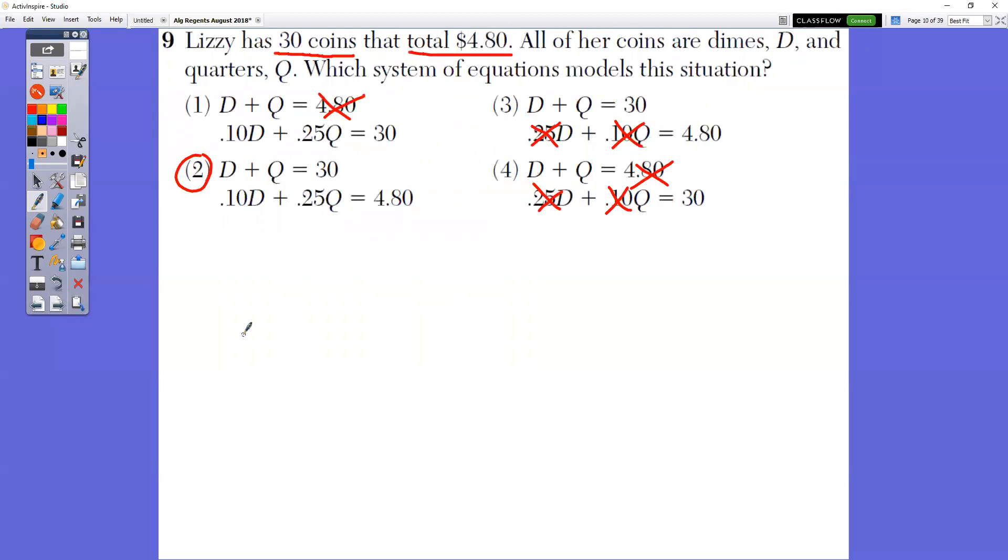In question number nine, they have this type of question a lot. Lizzie has 30 coins. So there's 30 coins total. So dimes plus quarters equals 30 total. And each dime is worth 10 cents. Each quarter is worth 25 cents. So when we're talking about the value of it, it's 480. So that would be choice number two.